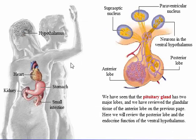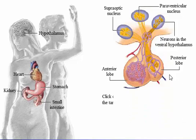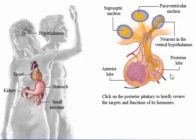We have seen that the pituitary gland has two major lobes, and we have reviewed the glandular tissue of the anterior lobe on the previous page. Here, we will review the posterior lobe and the endocrine function of the ventral hypothalamus. We will study the pituitary in detail in Topic 4. Click on the posterior pituitary to briefly review the targets and functions of its hormones.